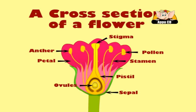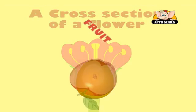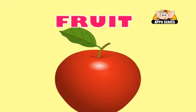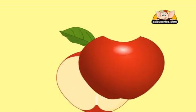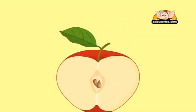After pollination of the flower and fertilization of the ovule, the ovule develops into a fruit. We will talk about this in detail later. Fruit provides a covering for seeds. Fruits can be fleshy like an apple or hard like a nut.